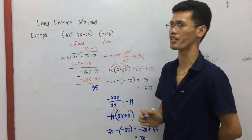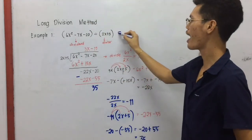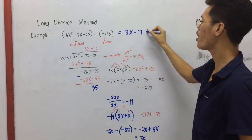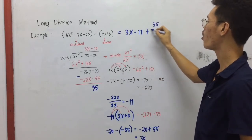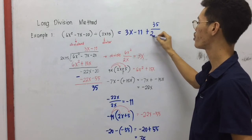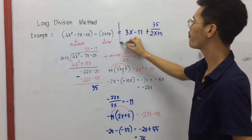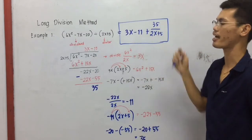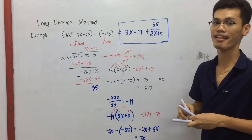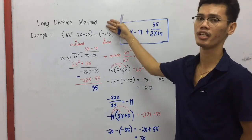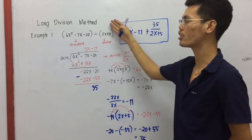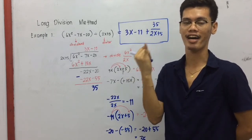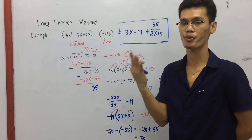So the final answer is written as: the quotient 3x minus 11, plus the remainder 35 over the divisor 2x plus 5. Therefore, the answer is 3x minus 11 plus 35 over 2x plus 5. That is all about dividing polynomials using long division method. Remember the four main steps: divide, multiply, subtract, and bring down.